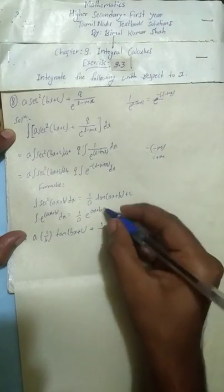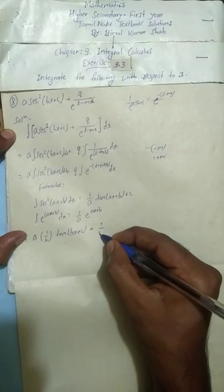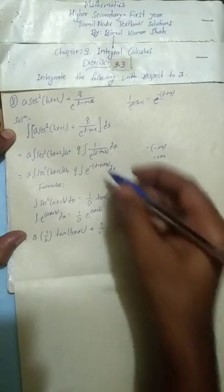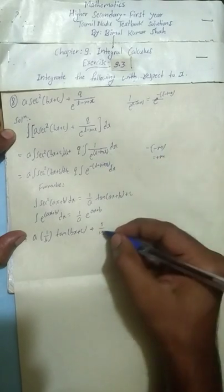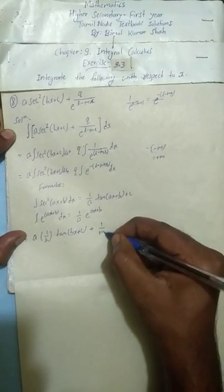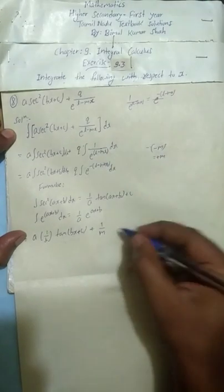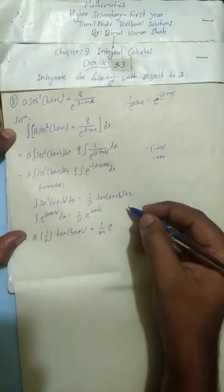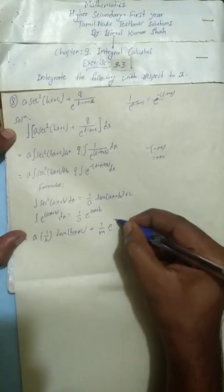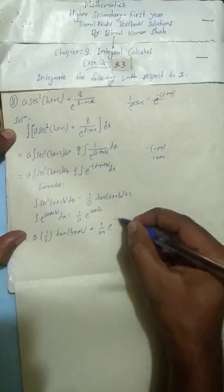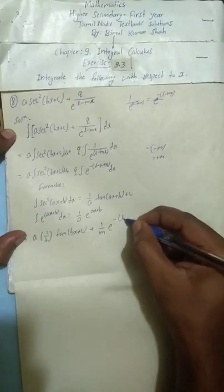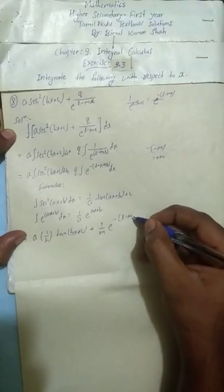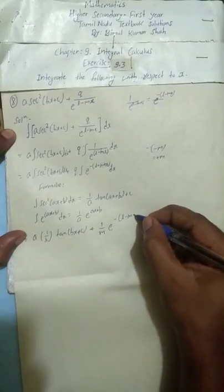So the coefficient contribution gives us plus m, meaning we write one by m — but because of the double negative we get plus m in the denominator. Then e to the power of minus (l minus mx) as it is.